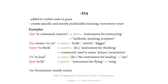Next is -tra, which is also added to verbal roots in guṇa, but creates nouns with a mostly predictable meaning: instrument nouns, i.e. nouns referring to instruments for doing what the verbal root describes. For example, on the basis of śās, to command or to instruct, we get śāstra, literally an instrument for instructing, and therefore used to mean textbook, teaching, scripture, and so on. On the basis of śas, which means to cut, we get śastra, meaning a cutting instrument — a knife, sword, dagger, and so on.